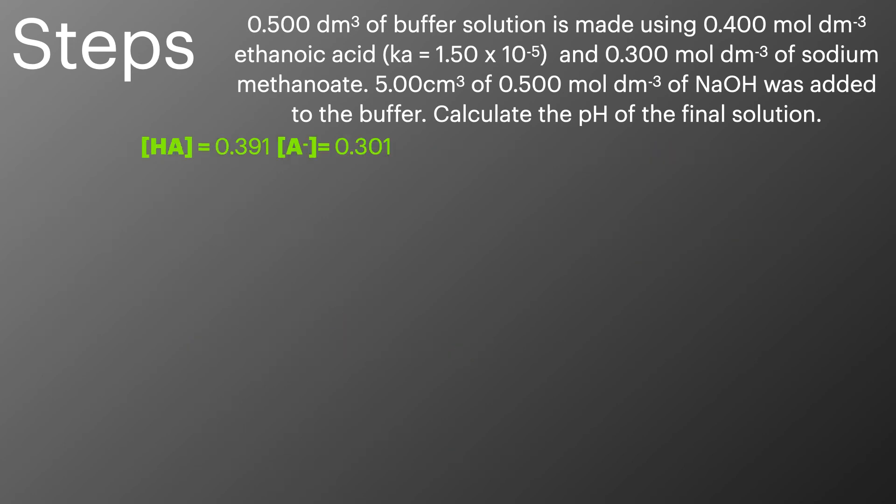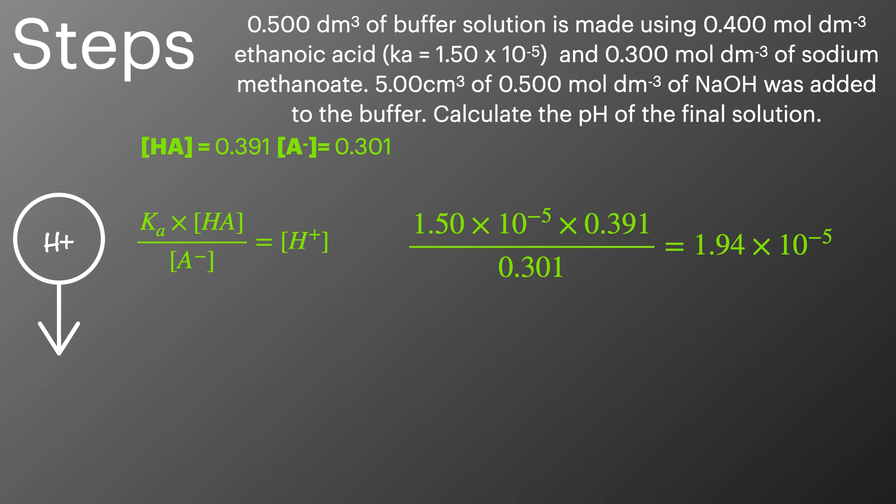The next step is now the same whether we're doing it for an acid or a base, and we're going to work out the hydrogen ion concentration. To do that we're going to use the Ka expression and put our values in to work out a value for the hydrogen ion concentration.